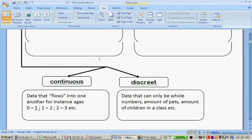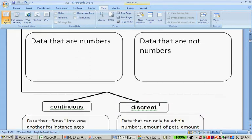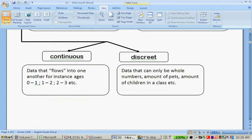Numerical data can be differentiated between continuous and discrete data. Now continuous data is data that flows into one another. For instance, ages between 0 and 1, 1 and 2, 2 and 3. Or people's lengths between 1.2 and 1.3, between 1.3 and 1.4 meters, between 1.4 meters and 1.5 meters, etc.